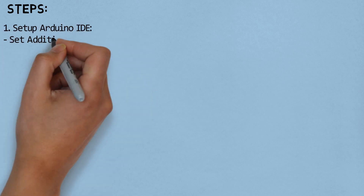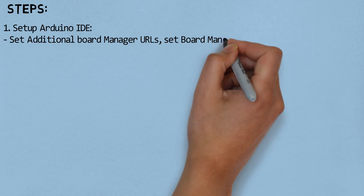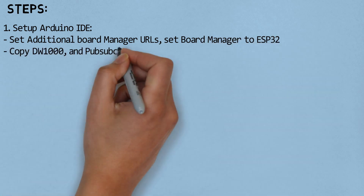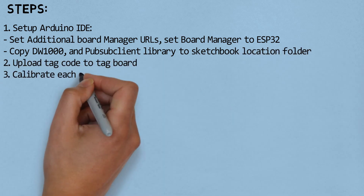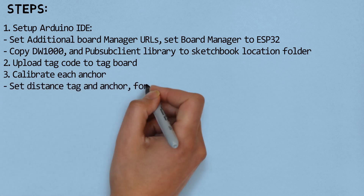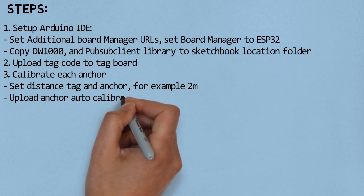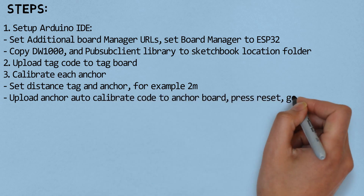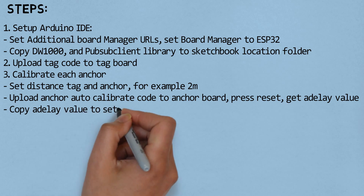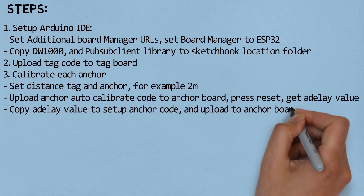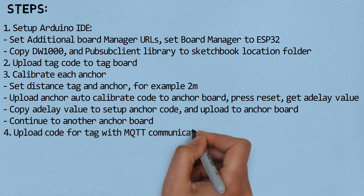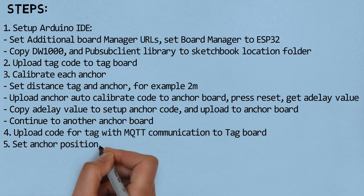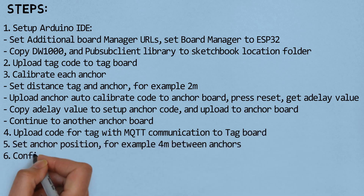These are the steps. First, set up Arduino IDE, set up the board for ESP32, then copy the required libraries to the Arduino libraries folder. Second, upload the tag code to the tag board. Third, calibrate the anchors by setting the distance between tag and anchor. Upload the anchor auto-calibrate code to the anchor board, then get the delay value. Copy the delay value to the anchor code, and then upload the code to the anchor board. Continue to the next anchor board. Fourth, upload code to the tag with MQTT communication. Fifth, set the anchors' positions. Sixth, configure and run the Python program.